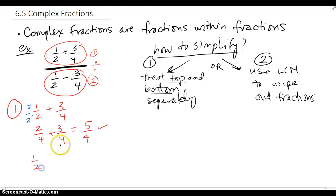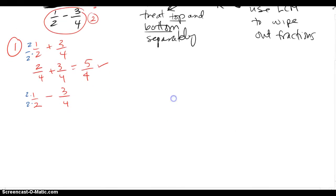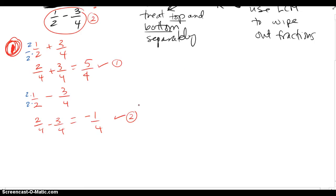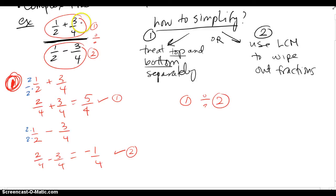For the denominator, I'm going to take one half and subtract three fourths from it. I need a common denominator of four, so two and two get multiplied, and I end up with two fourths minus three fourths, which is negative one fourth — so I have one fraction there. Now with Method 1, the top is done and the bottom is done, and I'm going to divide the two: top fraction combined into one divided by bottom fraction combined into one.